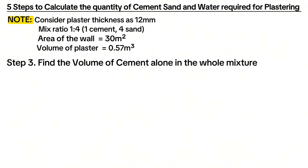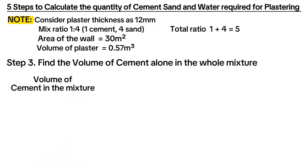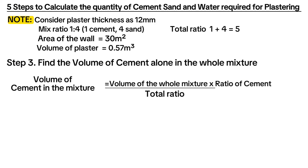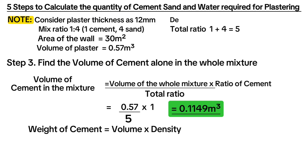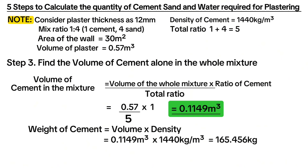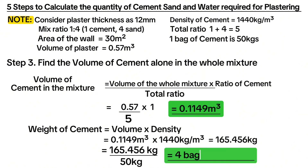Step 3 is to find the volume of cement alone in the whole mixture. Considering a mix ratio of 1 to 4 — 1 part cement and 4 parts sand — the total ratio is 5, meaning cement takes 1 part out of 5. Volume of cement equals volume of whole mixture divided by total ratio, multiplied by the ratio of cement, giving 0.1149 m³. Weight of cement equals volume multiplied by density; using a density of 1,440 kg/m³, the weight is 165.456 kg, which gives approximately 4 bags of cement at 50 kg per bag.